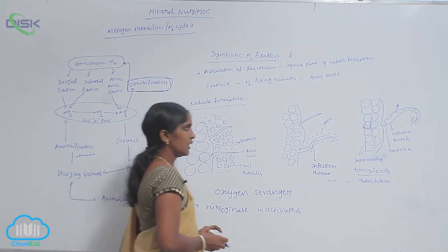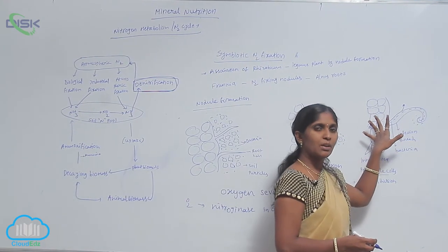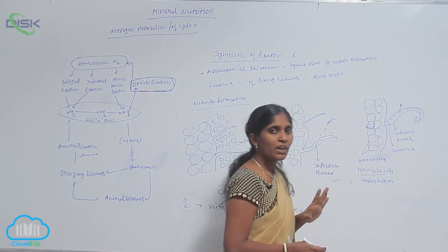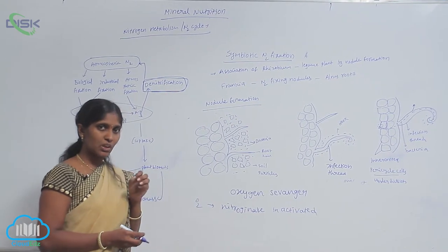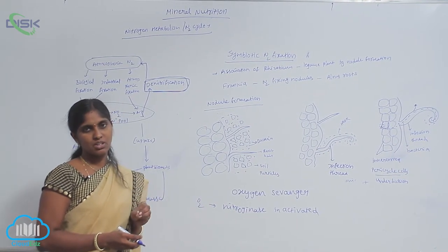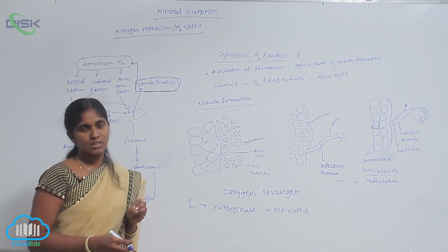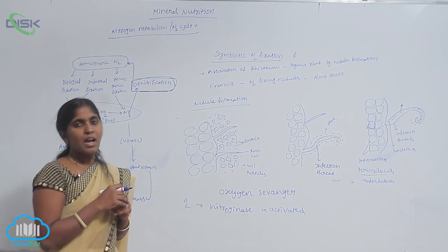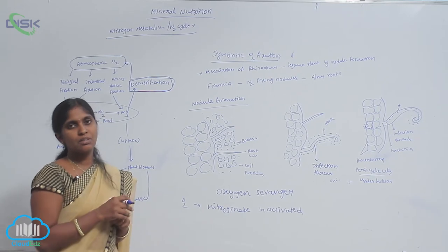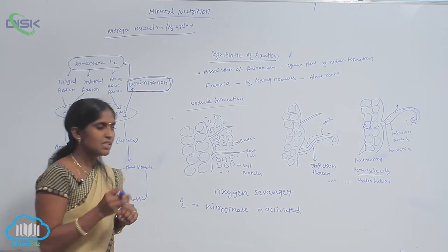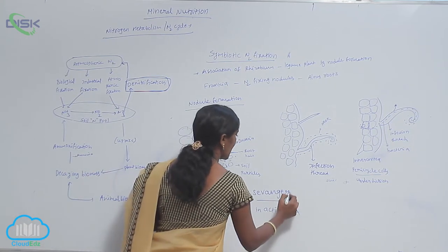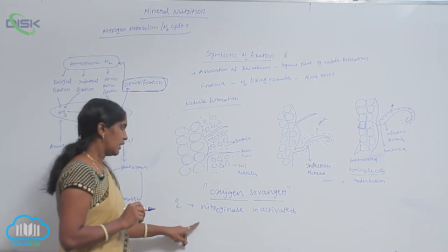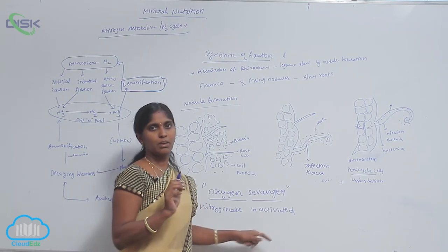When oxygen is available, the nitrogenase enzyme becomes inactivated. To reduce the oxygen concentration, leghemoglobin works by absorbing the surrounding oxygen and making the atmosphere oxygen-free. Hence it is called an oxygen scavenger, and it also helps nitrogenase activity function normally.